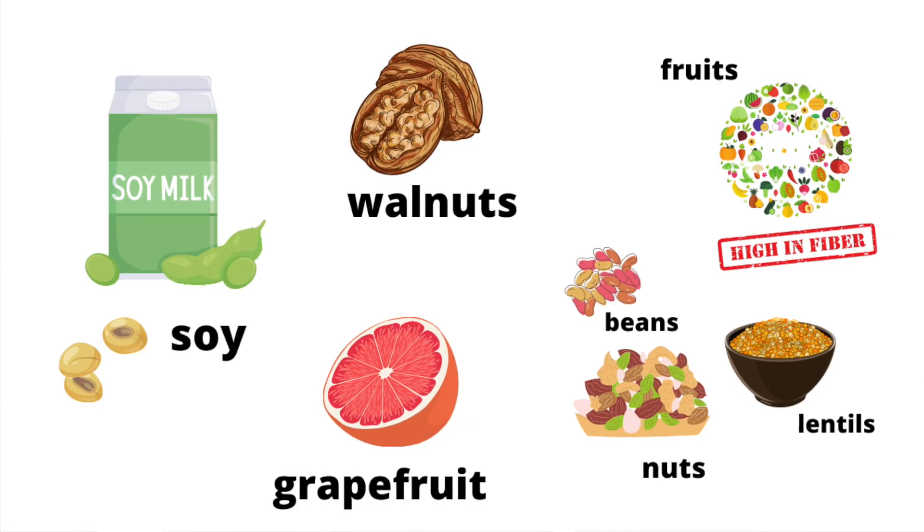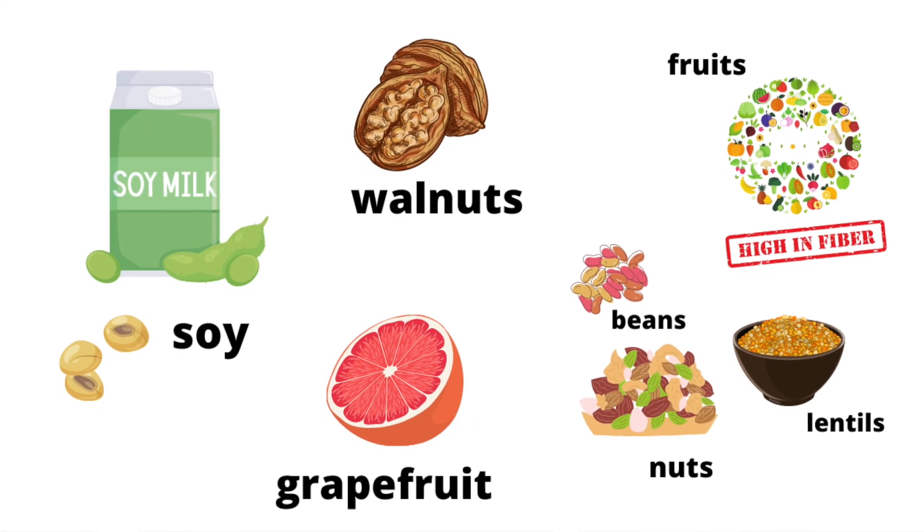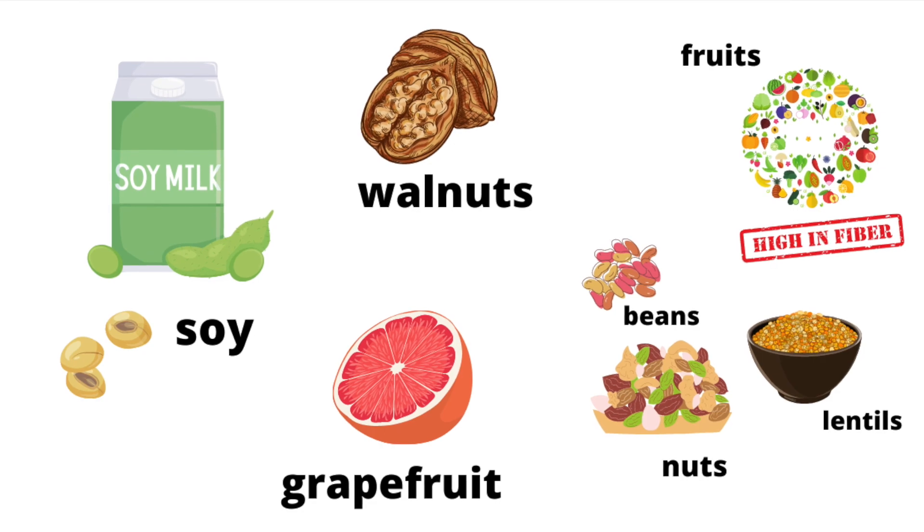Number four: the following foods can interfere with the absorption of thyroid medications — foods with soy, walnuts, grapefruit, soybean flour, dietary fiber such as fruits, beans, lentils, and nuts. Make sure these food items are adequately spaced out by several hours when you're taking thyroid medications.